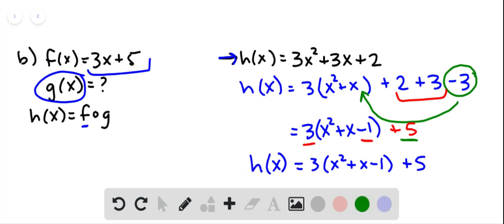Now that matches with our f of x, 3 times something plus 5. So that something on the inside, that must be our g. So g of x is x squared plus x minus 1.